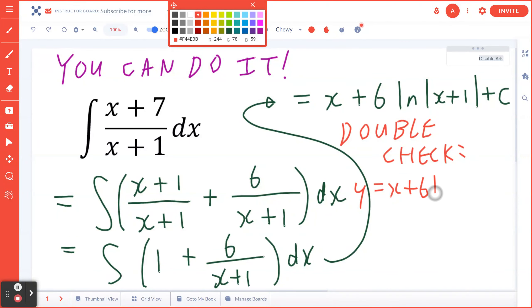When you find a derivative dy/dx, this equals 1 plus 6/(x+1). The derivative of a constant, of course, will be zero. And if you combine this as one fraction.